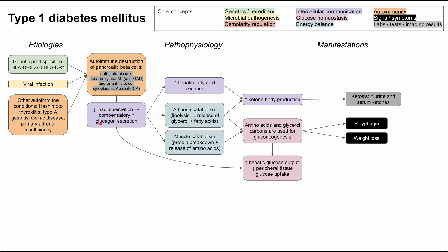This low insulin, high glucagon state also results in high hepatic glucose output and low peripheral tissue glucose uptake. Because insulin is so low, peripheral tissues won't be able to use blood glucose. The amino acids and glycerol used for gluconeogenesis also result in high hepatic glucose output. The net result of this low insulin, high glucagon state is high glucose in the blood — hyperglycemia.